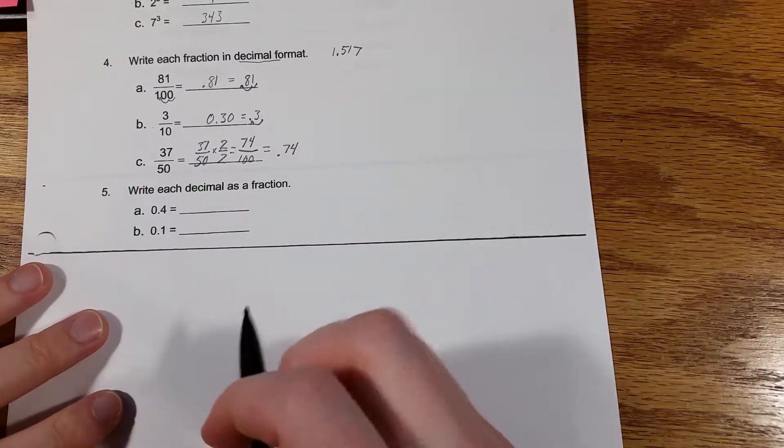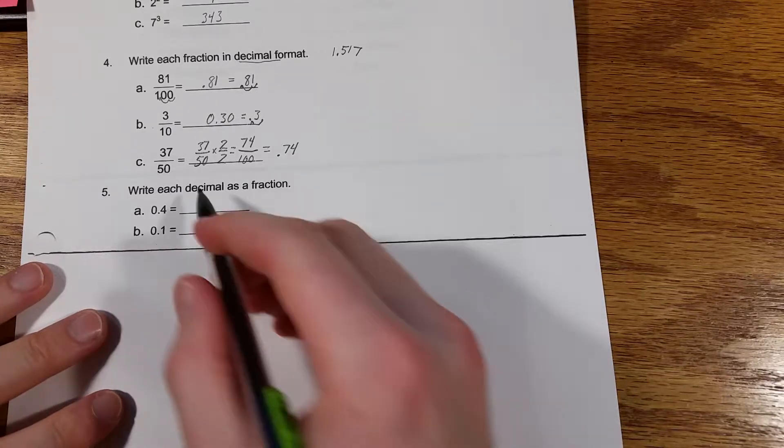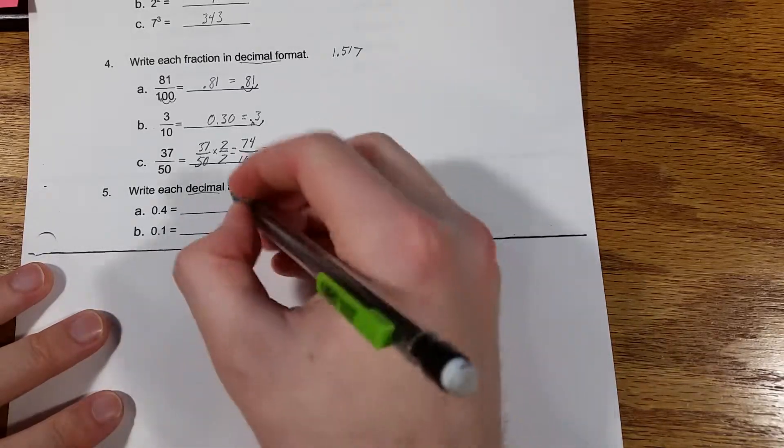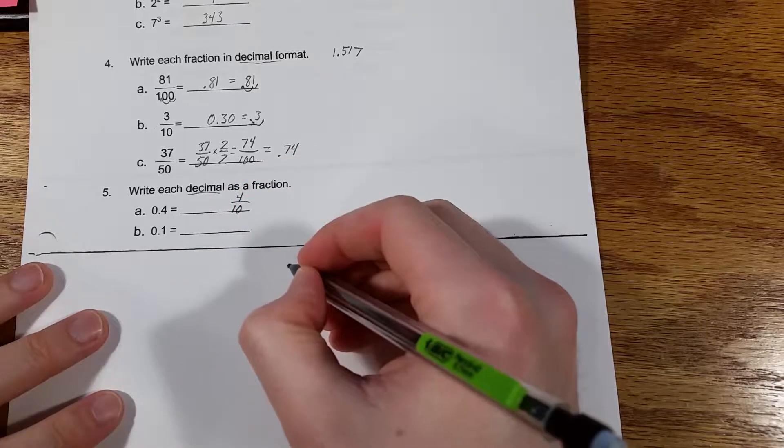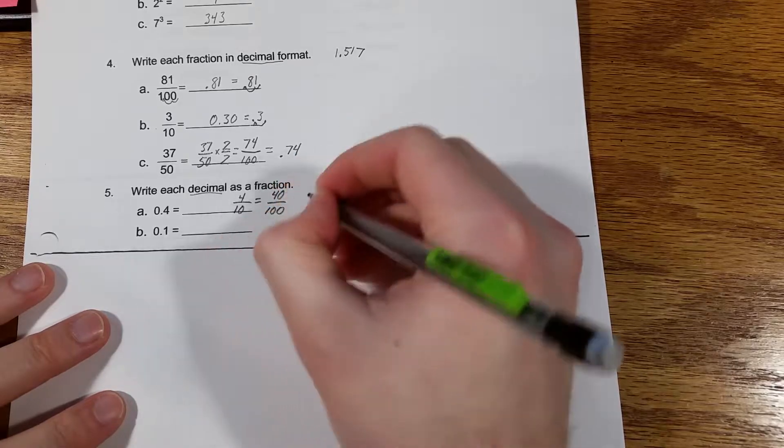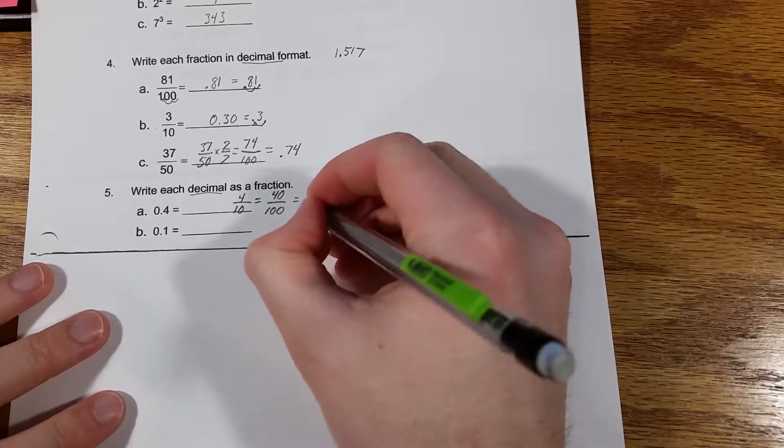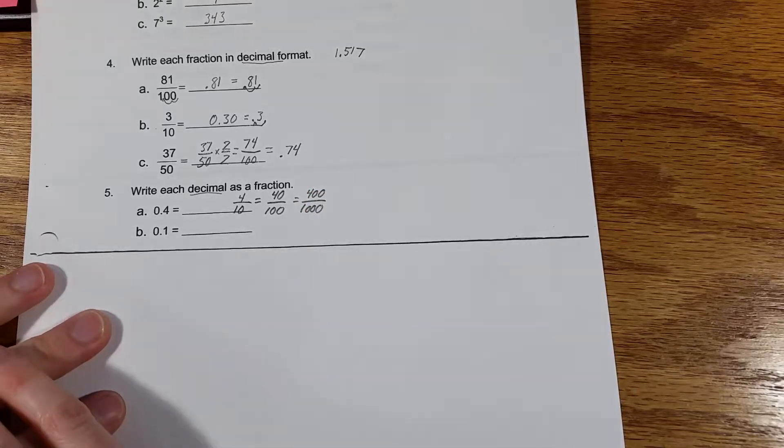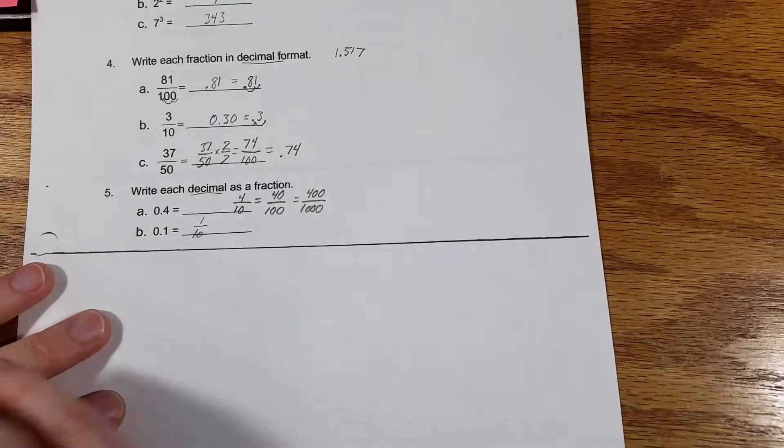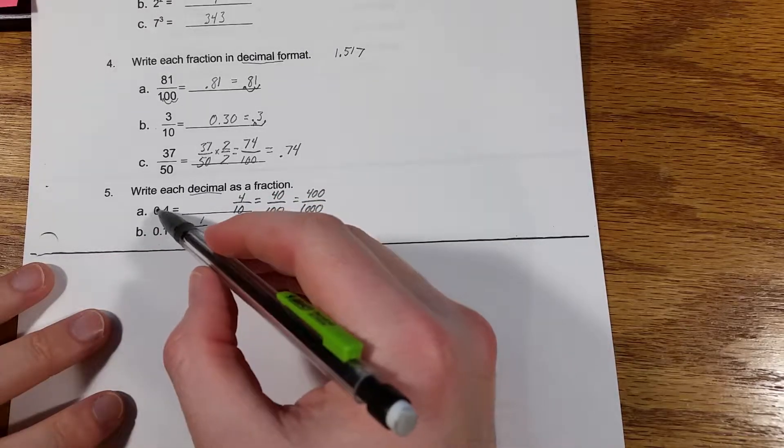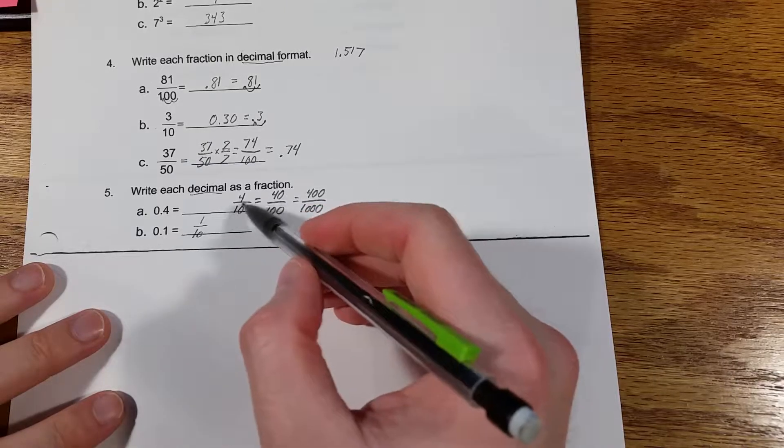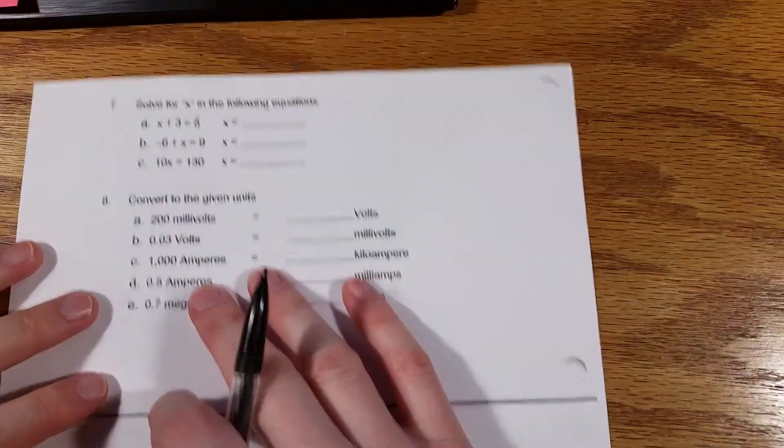Number 5, write each decimal as a fraction. So this is the decimal format already, and it wants us to write these as fractions, so 0.4, that would just be 4 divided by 10. Or you might also say that is 40 divided by 100, or 400 divided by 1,000. 0.1, that would be 1 over 10. Another way to actually read these is 4 tenths and 1 tenth, and that's literally how you would also write them.